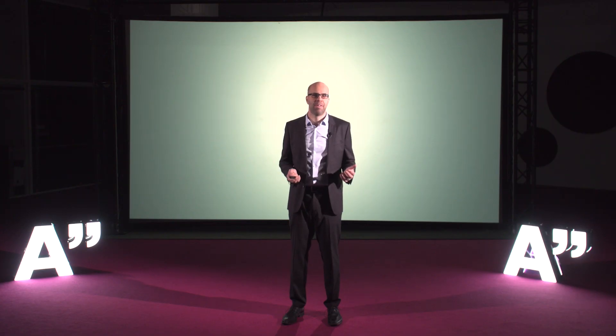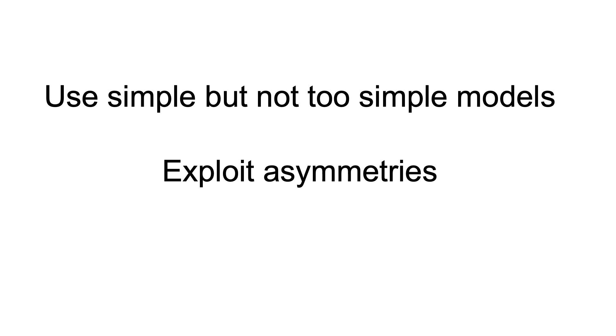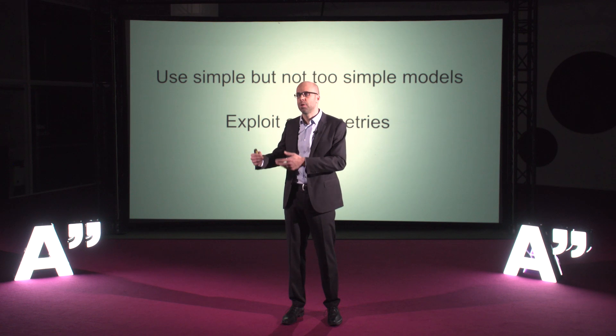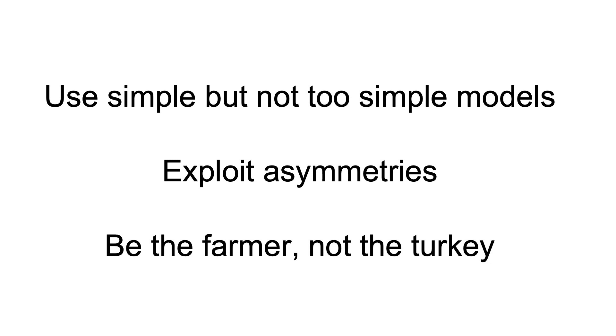So I have offered three strategies for dealing with uncertainty. The first: use simple but not too simple models. Second: think in terms of possible outcomes — identify asymmetries instead of thinking about what is the more likely scenario. It might make sense to overreact early, but then you also need to adjust your response as you learn over time. And third: don't be the turkey. Understand the true situation and have a strategy.